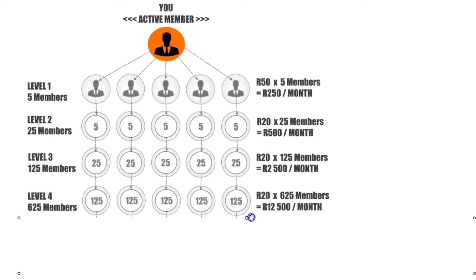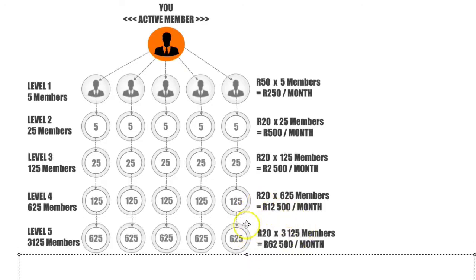In Level 4, 625 members will earn you 12,500 Rand. And finally, in Level 5, 3,125 members will earn you 62,500 Rand.